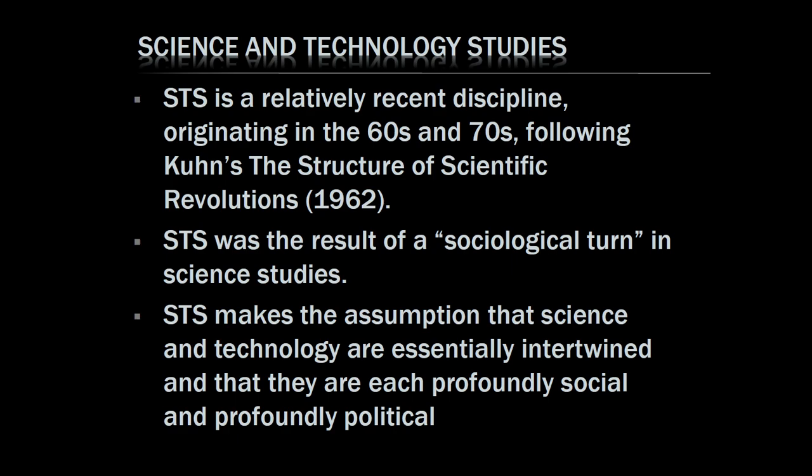Science and technology studies is a relatively recent discipline originating in the 1960s and 70s, following Kuhn's Structure of Scientific Revolution in 1962. STS was the result of a sociological turn in science studies. STS makes the assumption that science and technology are essentially intertwined and that they are each profoundly social and profoundly political. It existed before but was only part of a subject at universities.